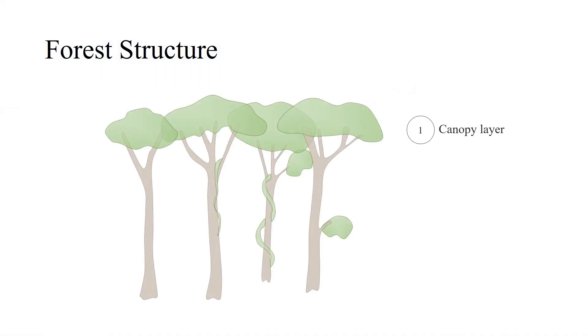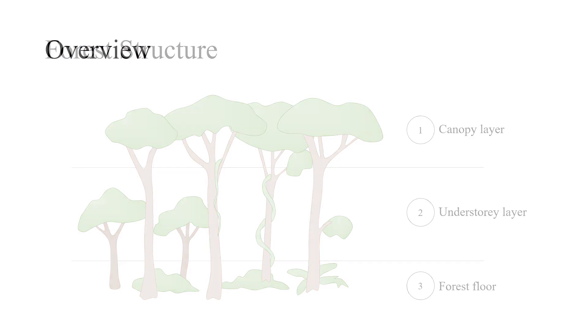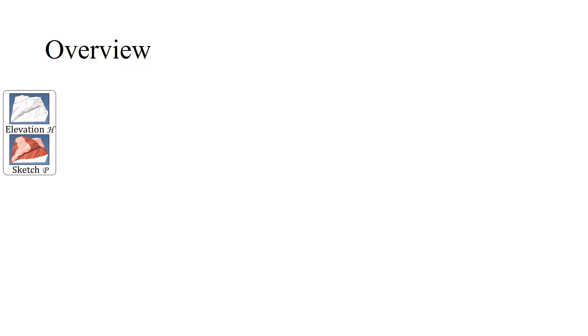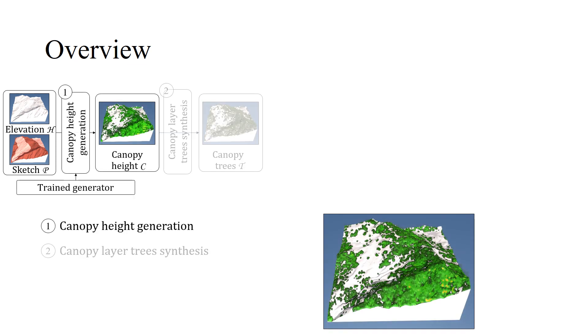Typical forests are composed of three structural layers: the canopy, the understory, and the forest floor. Our system works by taking an input terrain elevation and a coarse vegetation density map, from which it first creates a canopy height using a CNN generator.